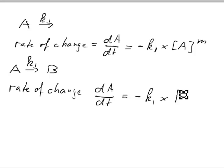dA equals minus K1 times the concentration of A, let's say again to the power of M. The minus is here because this reaction indicates a disappearance of A.